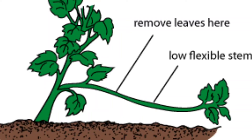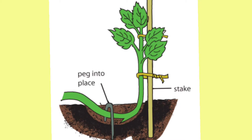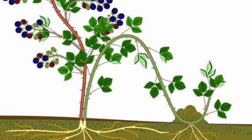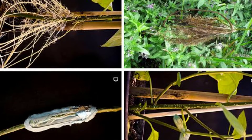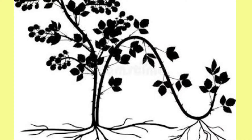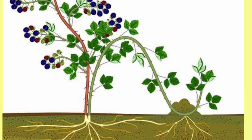In mound layering, the lower portion branch of the plant — the branch which is close to the ground — is bent down. We bend it further and bury a small part of it under moist soil. Within a few days, adventitious roots develop from that buried part. When adventitious roots appear, we cut the branch at that point and we get a new plant, which then grows on its own.